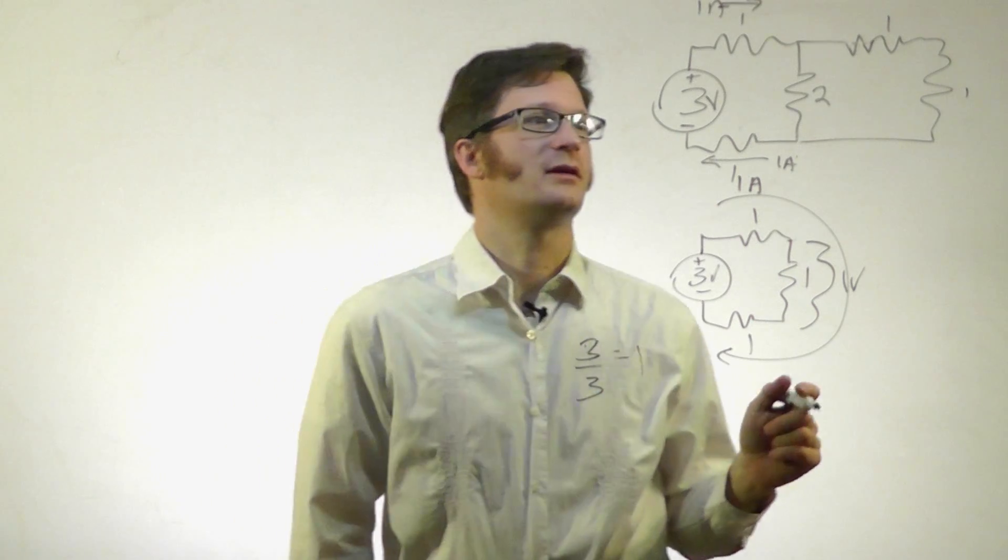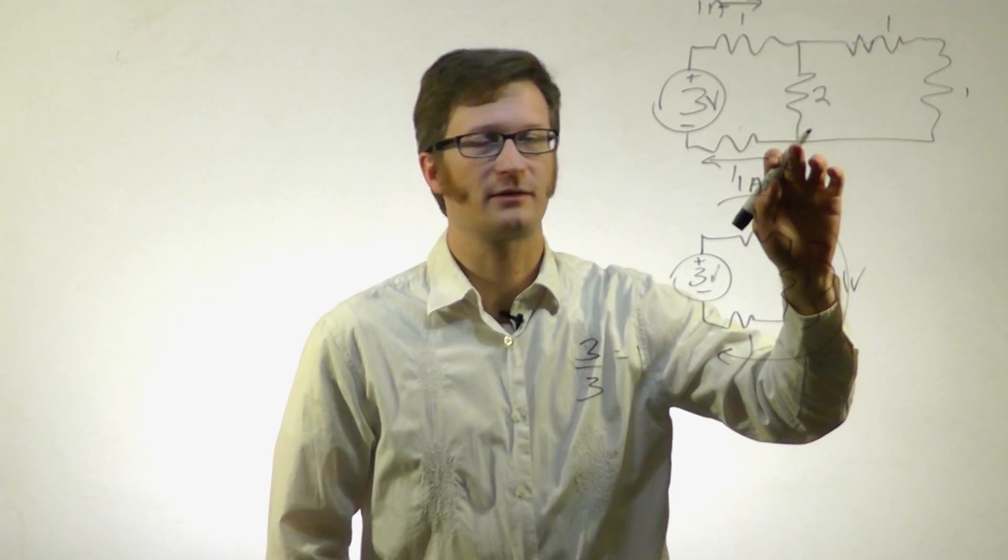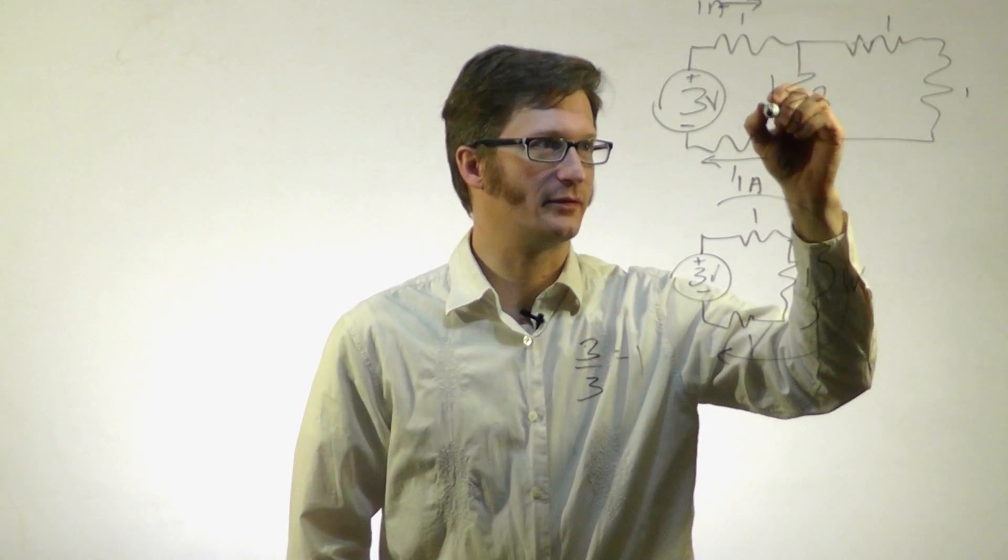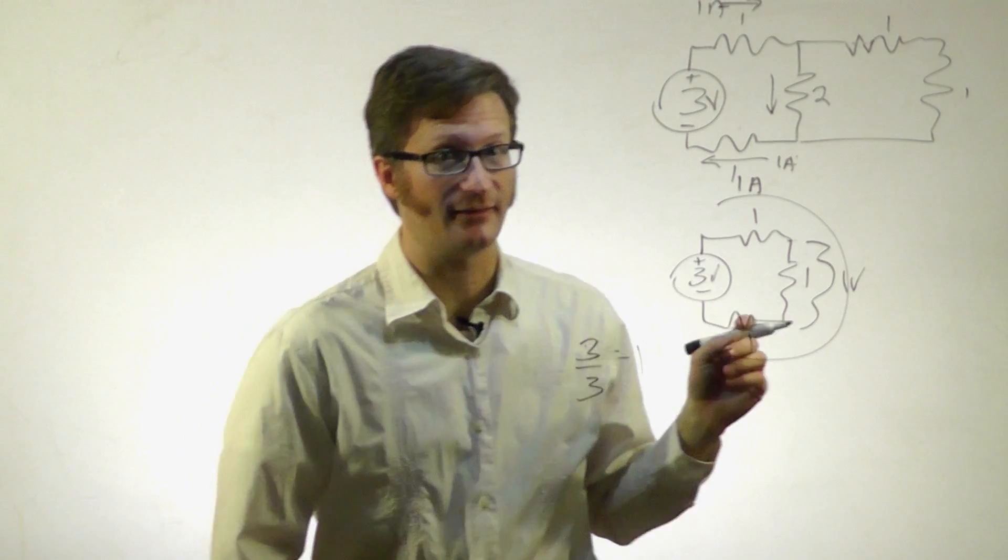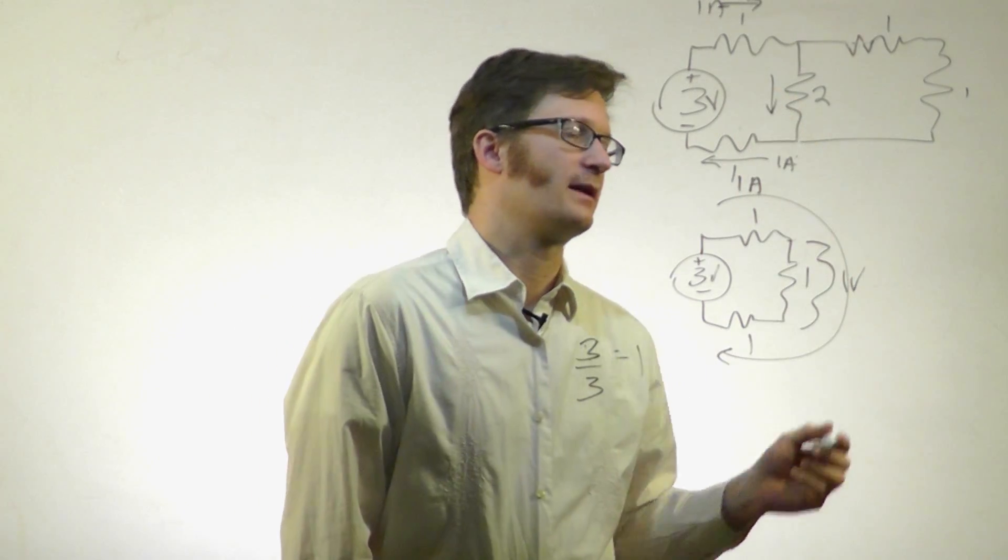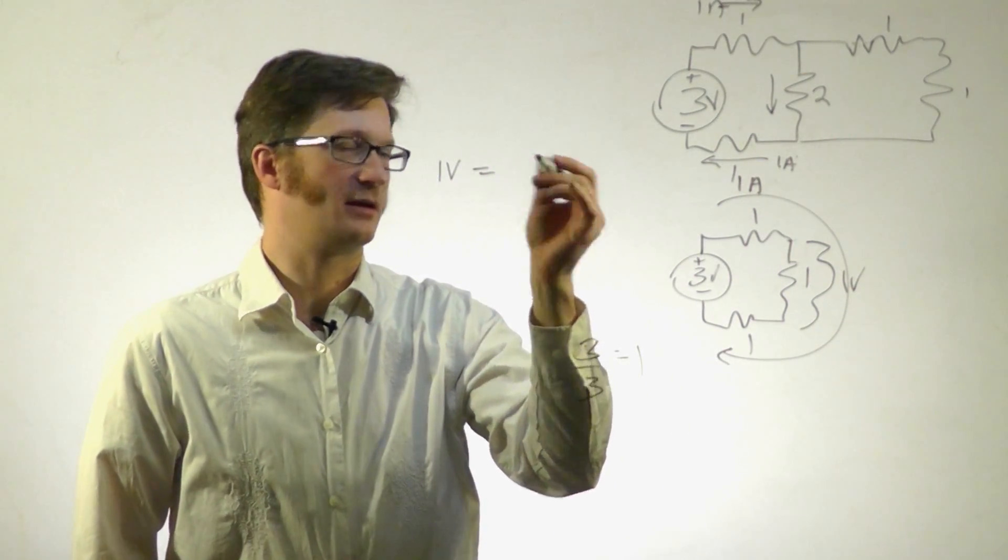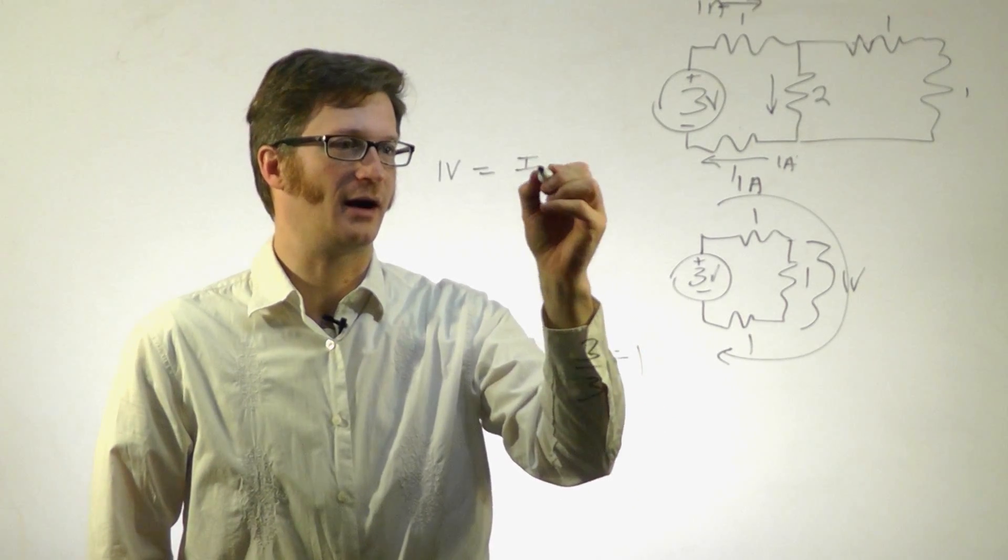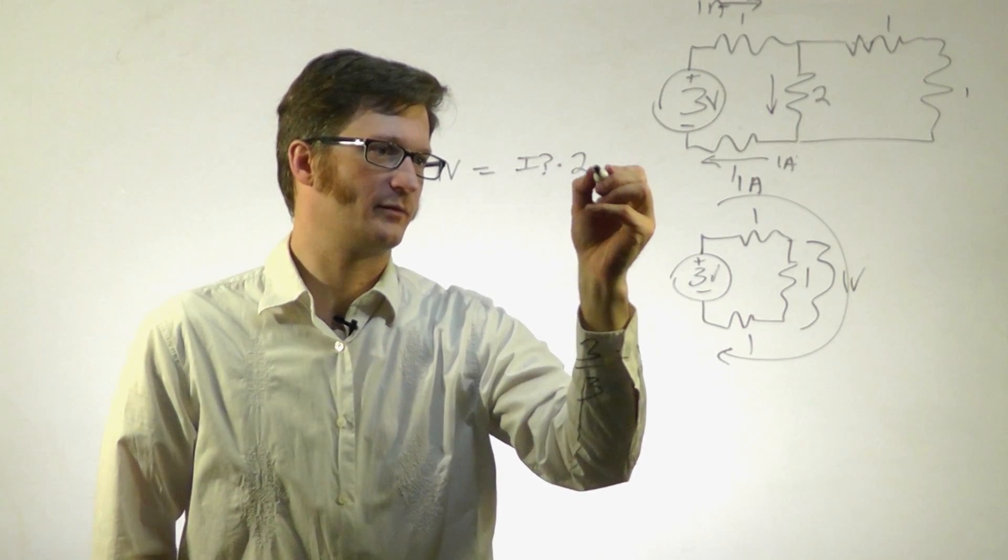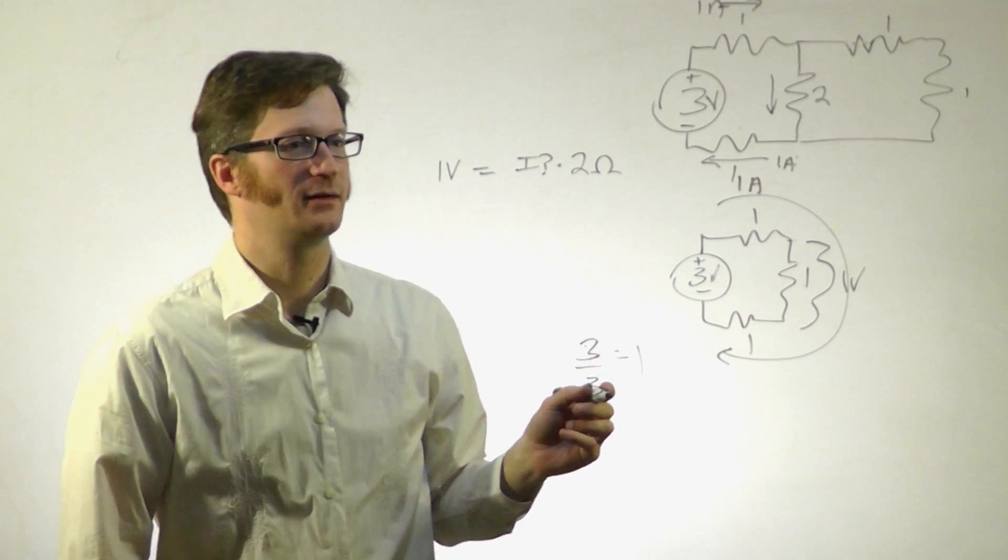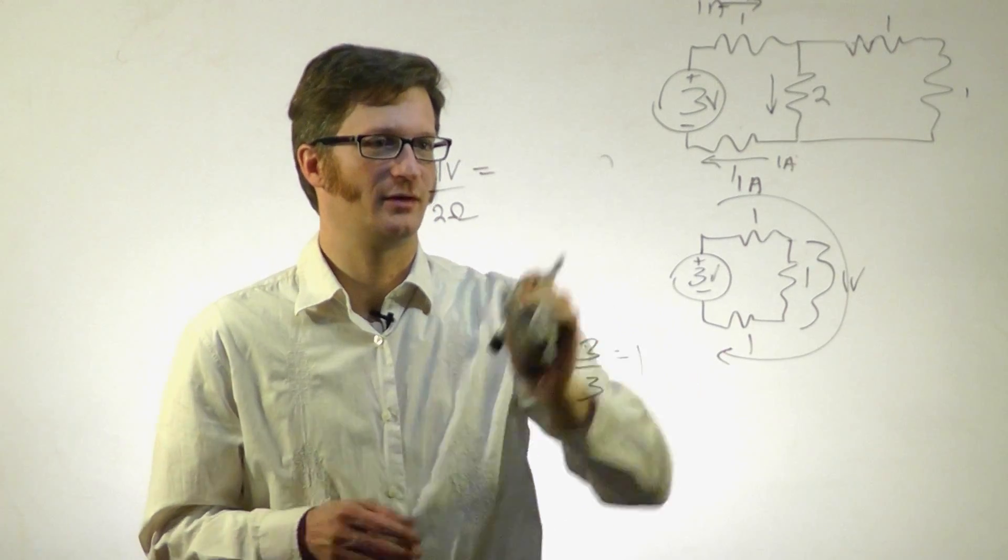Now we know the voltage across this resistor because between here and here, it's 1 volt. There's a 1 volt difference between the different ends of the resistor. Using Ohm's Law again, we have 1 volt equals, now my current is currently unknown, so I which is unknown, times 2 ohms. 1 volt divided by 2 ohms equals 1/2 amp.